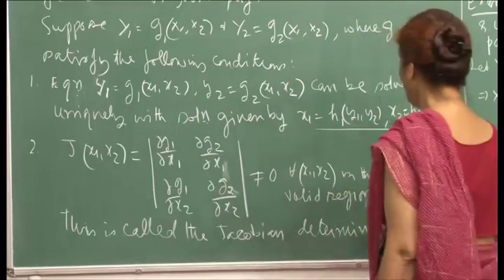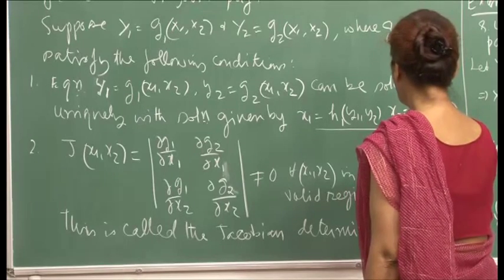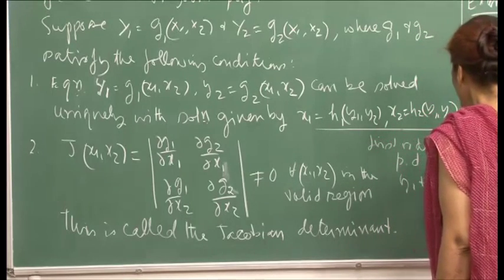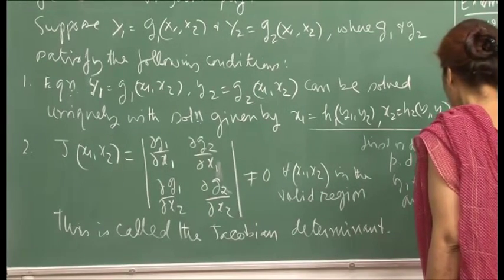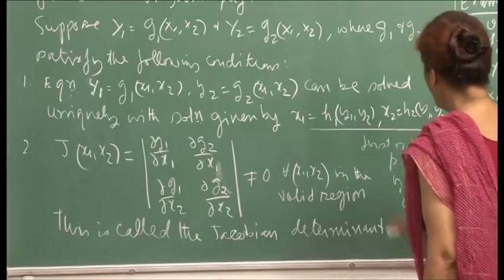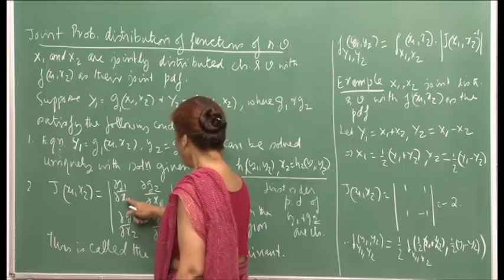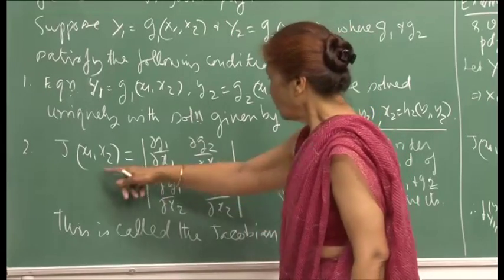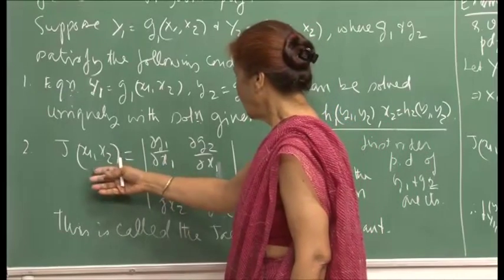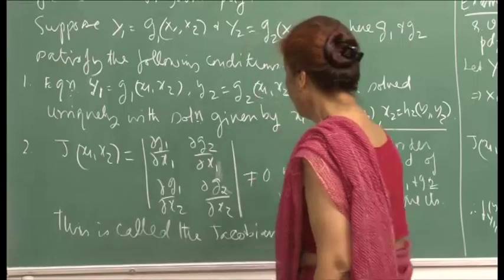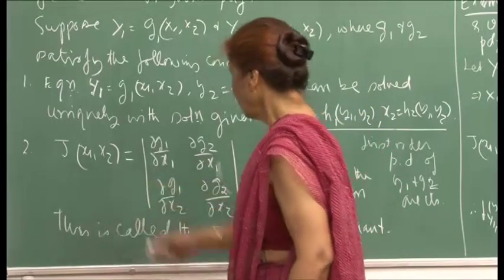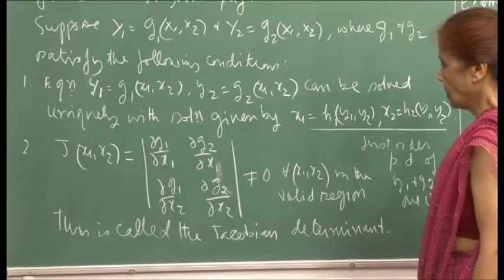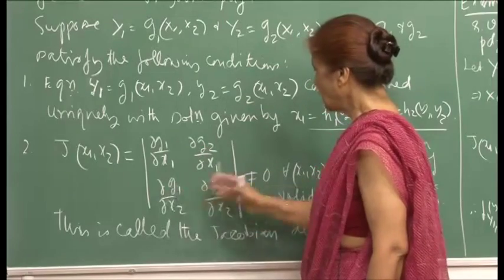The second condition is that the Jacobian — this set of partial derivatives — should be continuous, and the first order partial derivatives must exist and be continuous. We define this determinant, which is δg₁/δx₁, δg₂/δx₁, δg₁/δx₂, and δg₂/δx₂. The notation is sometimes written as δ(y₁,y₂)/δ(x₁,x₂). This determinant should not be 0 for all (x₁,x₂) in the valid region — the matrix must be non-singular.